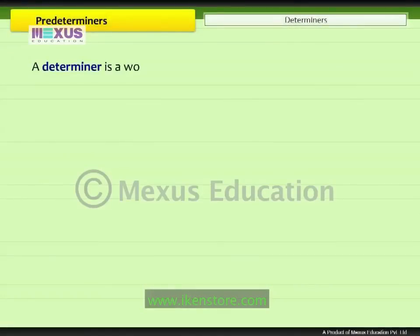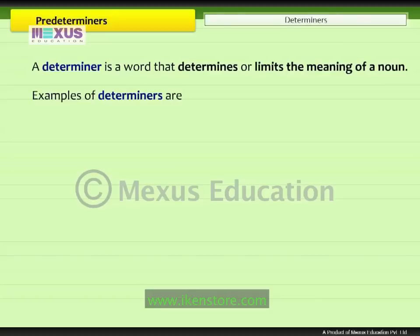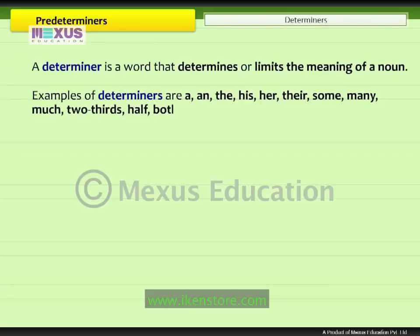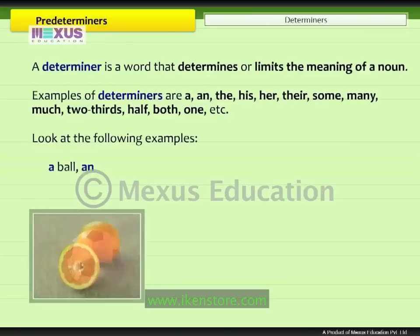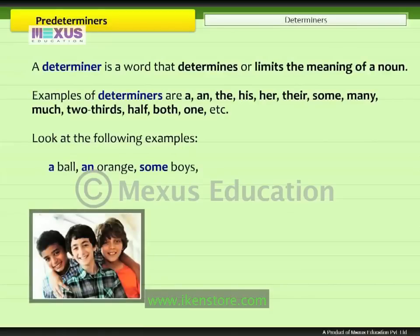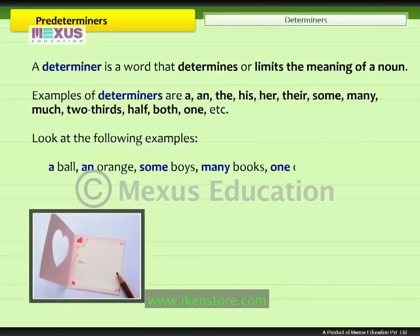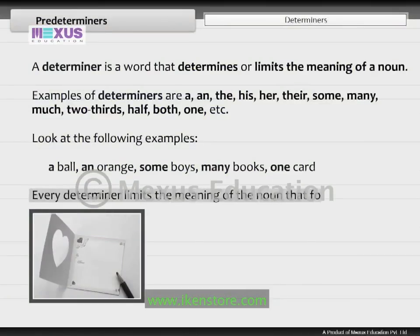A determiner is a word that determines or limits the meaning of a noun. Examples of determiners are: a, an, the, his, her, their, some, many, much, two-thirds, half, both, one, etc. Look at the following examples: a ball, an orange, some boys, many books, one card. Every determiner limits the meaning of the noun that follows it.